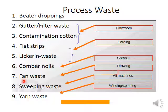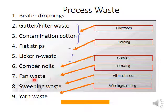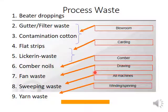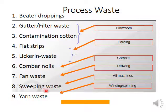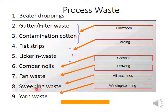In drawing, fan waste is generated from the drafting zone, where short fibers are sucked through a vacuum fan and collected in a filter. This fan waste comes from various types of drawing machines. Sweeping waste is material which has fallen to the ground and is collected by sweeping. Sweeping waste is dirty and may contain longer fibers and piecing material, but it cannot be reused.